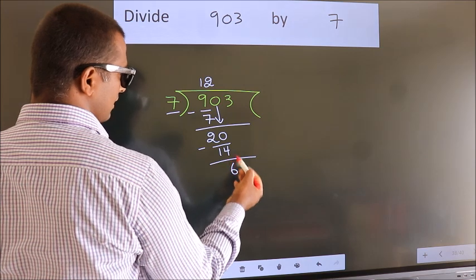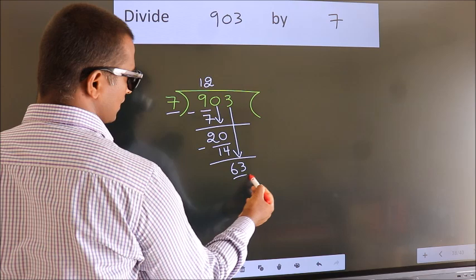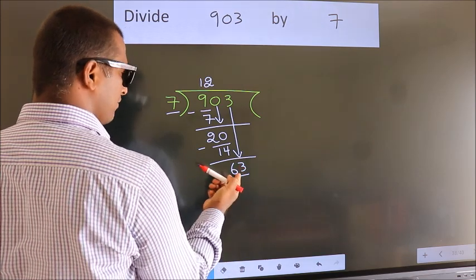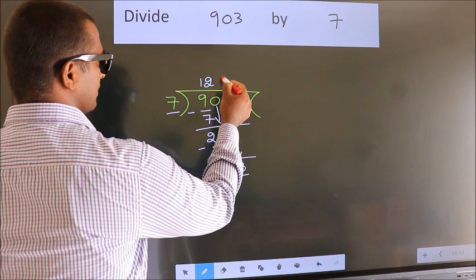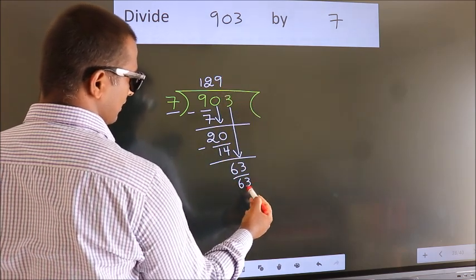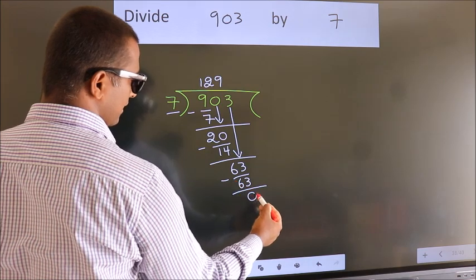After this, bring down the beside number. So, 3 down. So, 63. When do we get 63? In 7 table, 7 nines, 63. Now, we subtract. We get 0.